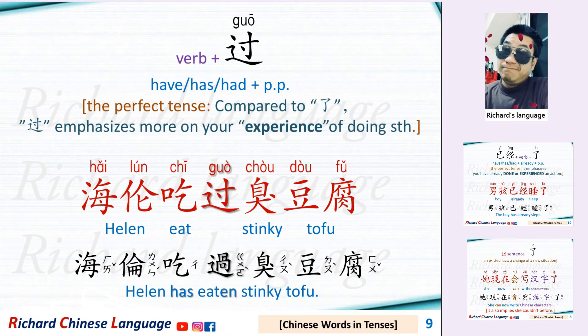A verb plus 过. This is the perfect tense. Compared to 了, 过 emphasizes more on your experience of doing something. For example: 海伦吃过臭豆腐 — Helen has eaten stinky tofu.